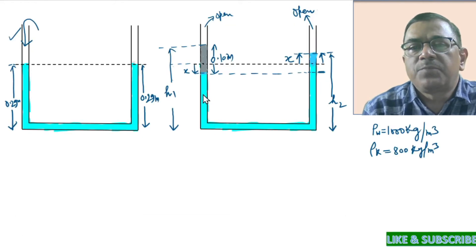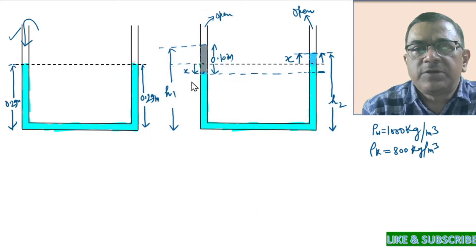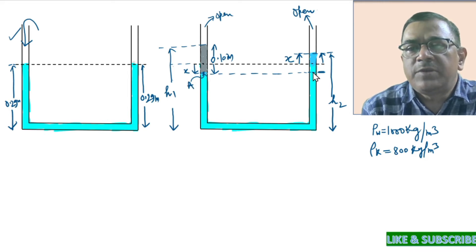Now we'll use the concept that the pressure is same at the same level. It is always advisable to choose one point on the interface of the two liquids. Let's assume this point to be A. On the other side, at the same level, there is a point B.